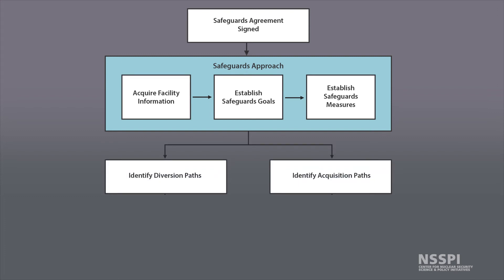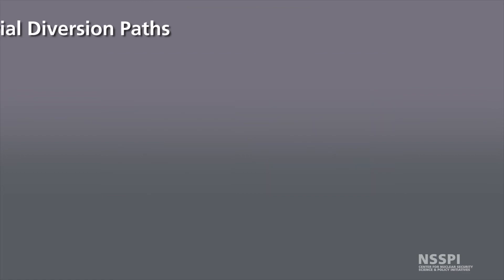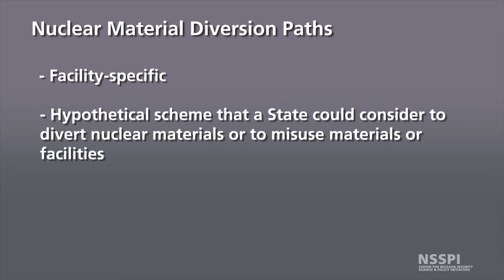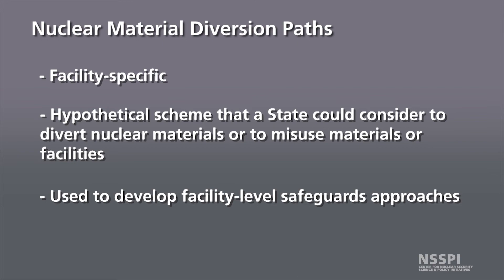In developing the safeguards approach, the IAEA must consider both diversion paths and acquisition paths to ensure the approach can meet the challenges posed by both. A diversion path — or nuclear material diversion path — is facility-specific and refers to a hypothetical scheme which a state could consider to divert nuclear materials or to misuse materials or facilities. It is postulated for purposes of developing facility-level safeguards approaches.